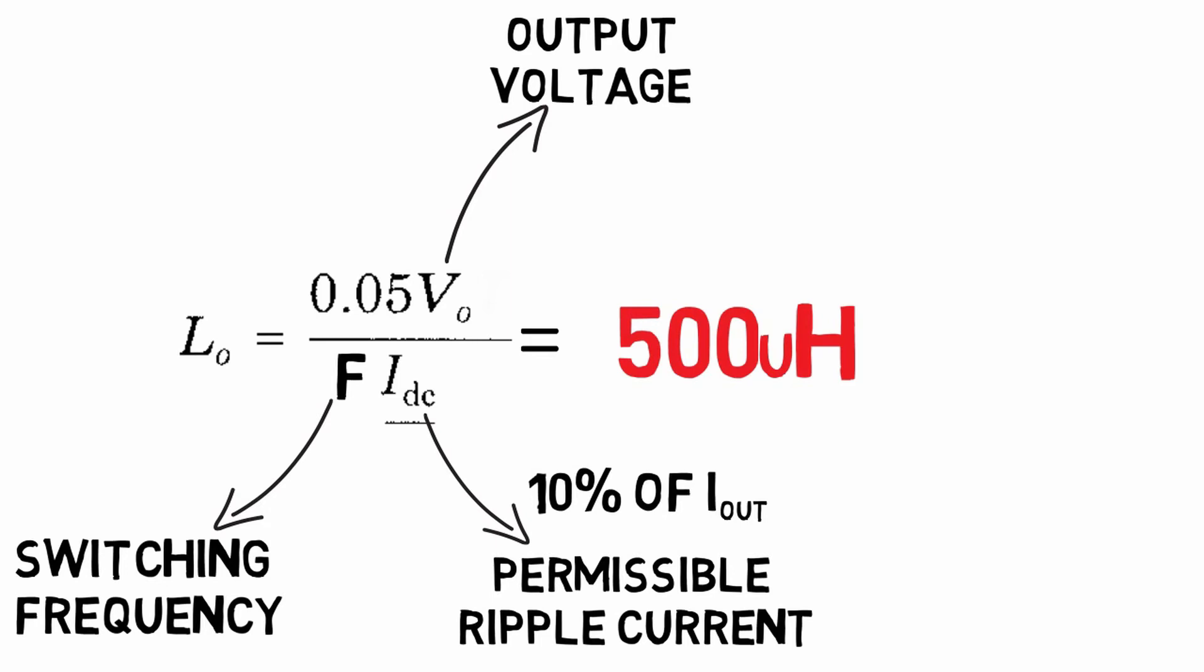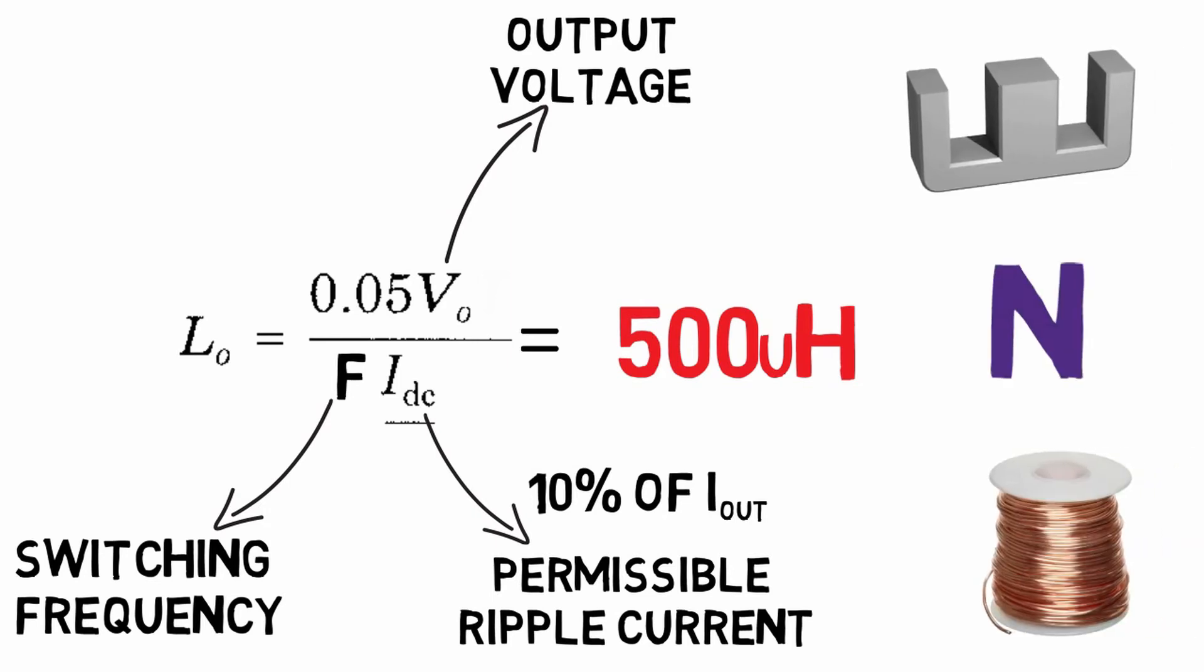This is the minimum value of inductance we should use. We need to design this type of inductors too. First we need to select the type of core, number of turns, and type of wire. For inductor design you can refer to my previous videos of buck converter or boost converter design.